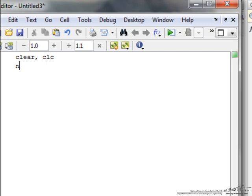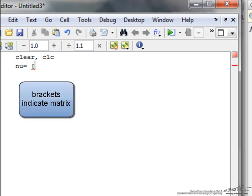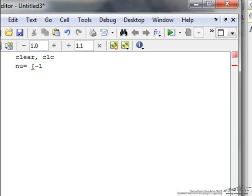The first two commands are just to clear the workspace and the command window, and then we are going to input the matrix, so I am calling the matrix nu, I use a bracket to indicate the matrix, and then the value is minus 1.